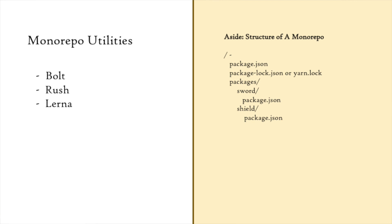Bolt, Rush, and others may also suit your needs — it's really not something I can judge. And as you can see there is an aside on the structure of a monorepo. Pretty much every monorepo I have encountered has a similar structure where you have a top-level directory called packages, and inside packages are your packages — those packages have their metadata or whatever else they need to export.